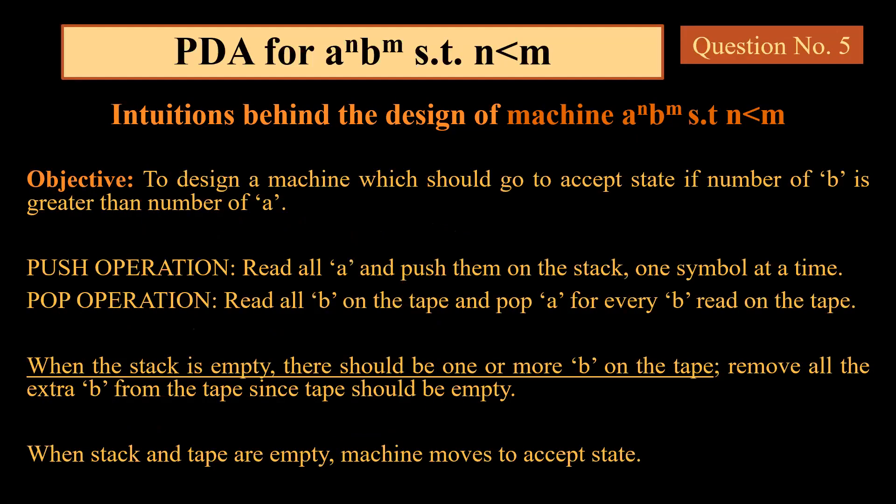Starting with the first question: pushdown automata for aⁿbᵐ such that n is less than or equal to m. We need to design a machine which goes to the accept state if the number of b's is greater than the number of a's. The push operation will push all the a's onto the stack, and the pop operation will start by popping all the elements from the stack. The important point is when the stack is empty — meaning all a's have been popped by corresponding b's — there should be at least one or more b's remaining on the tape, because the number of b's is more than the number of a's.